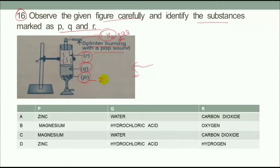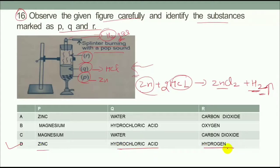When we bring the burning splinter to it, P is your zinc and Q is your hydrochloric acid. When we react, this is zinc chloride and H2 gas. If we balance them, it will be 2. P is zinc and Q is hydrochloric acid. This is D.